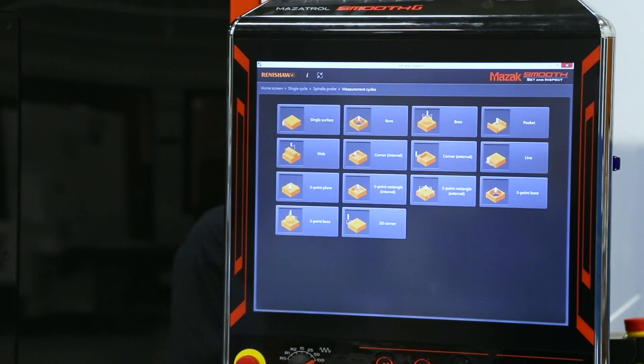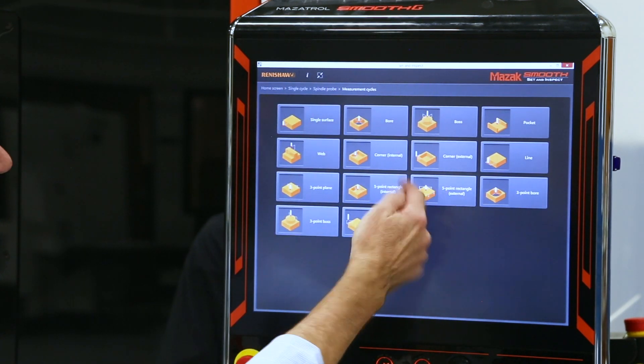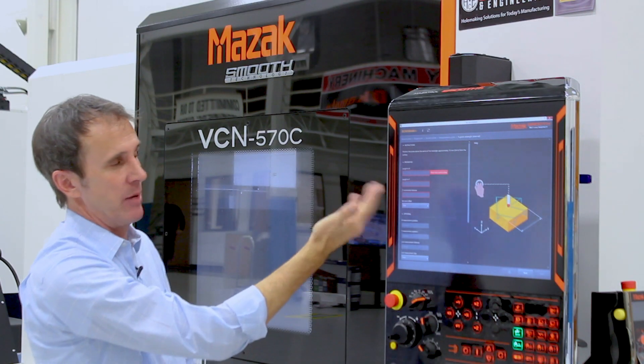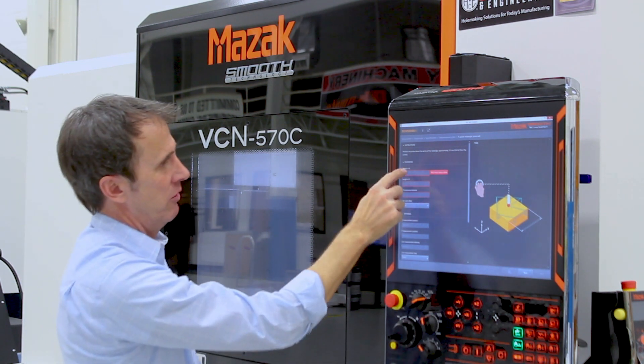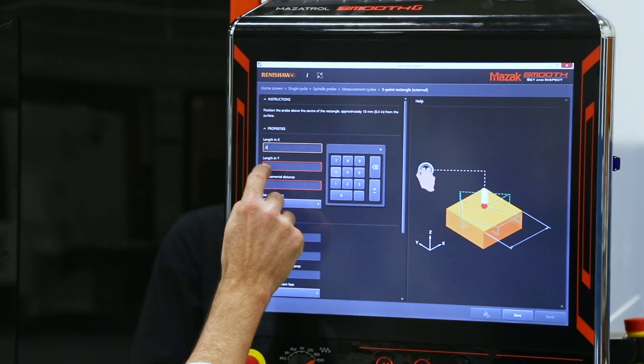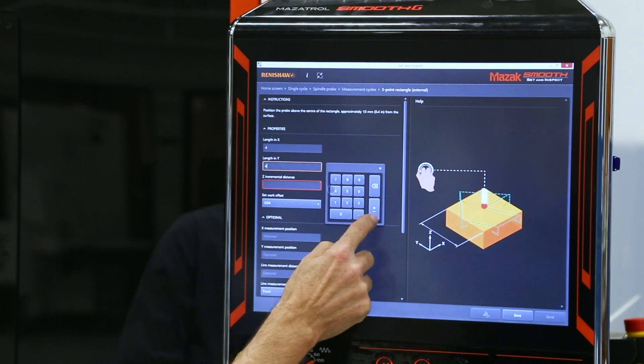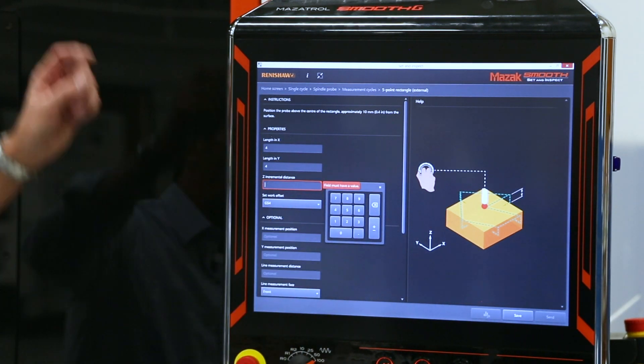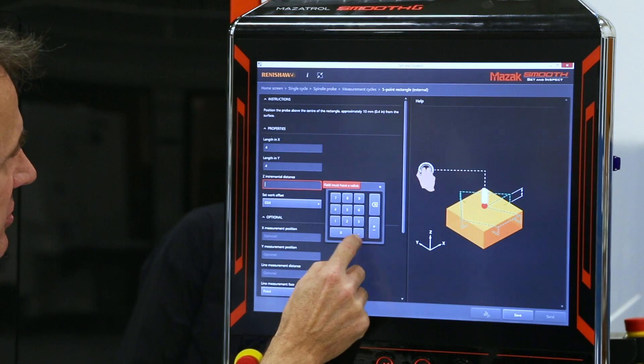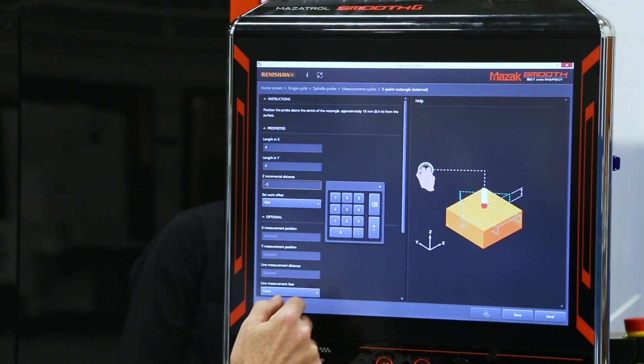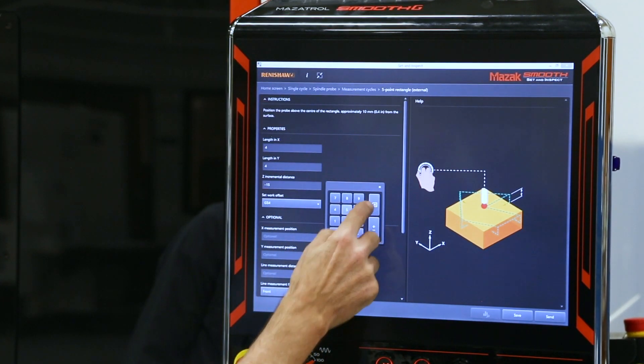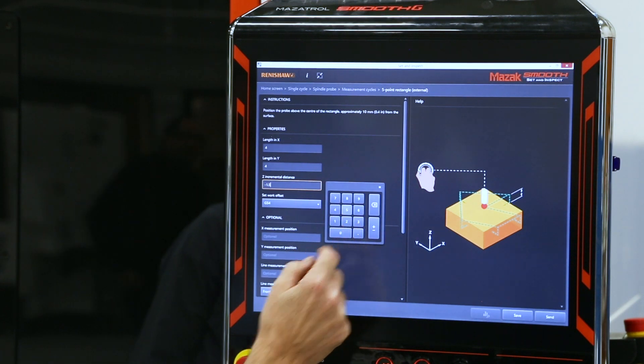You can see I have a variety of choices here. I'm going to do a five-point external rectangle. It's going to ask me a couple approximate values. So my X, approximately four inches. My Y is approximately a four inch wide block. And I want my probe to travel an incremental distance of negative an inch and a half to tell it where I would like it to come down and touch off with the probe.